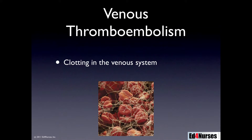A venous thromboembolism is a clot that has formed in the venous system. We used to call these DVTs — you still see some reference to DVTs in the literature — however, now we're talking about them as venous thromboembolism. Deep vein thrombosis really isn't that descriptive, since it can be superficial too, so we've gone with the term venous thromboembolism. As soon as you learn the terminology, they'll change it on you again.